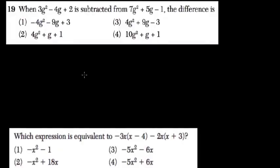Okay, so here we're just dealing with like terms. They say when 3g² - 4g + 2 is subtracted from 7g² + 5g - 1, what's the result or what's the difference?